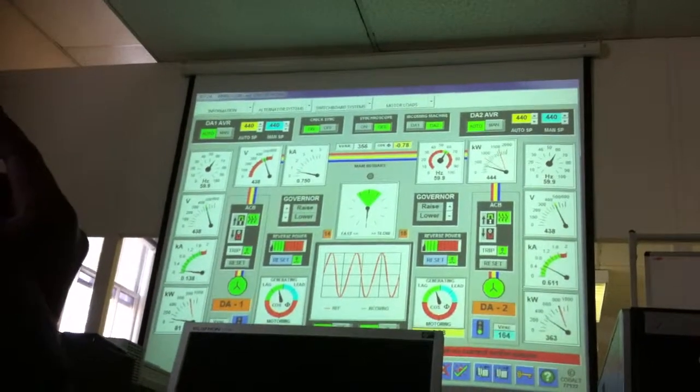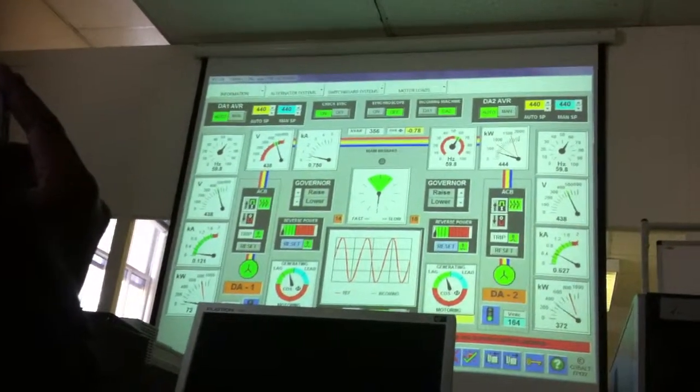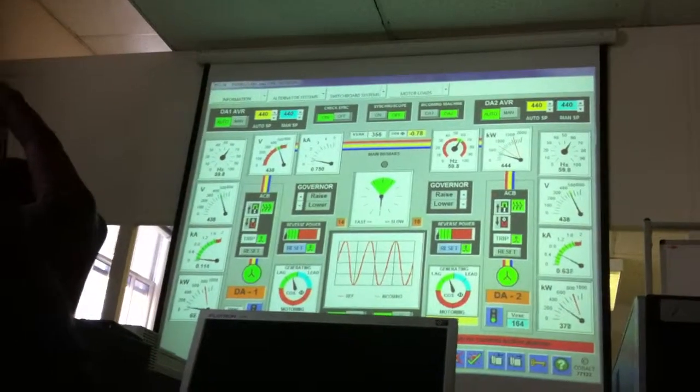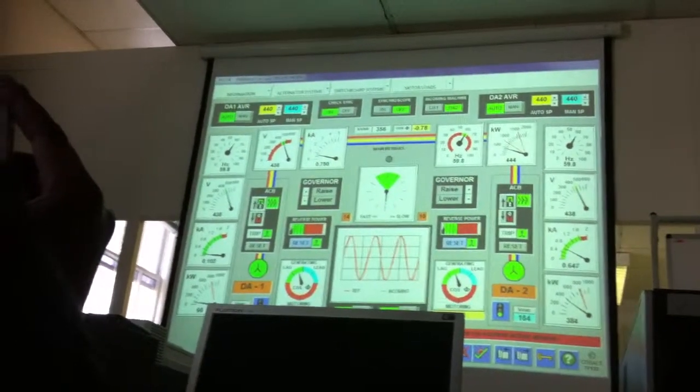And what we're looking for here is the alternator going off of the board, should be around 10 kilowatts. So when we trip the breaker, less chance of getting arcing, damaging that breaker.